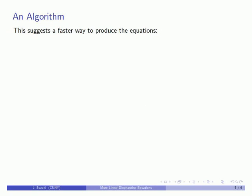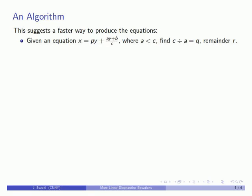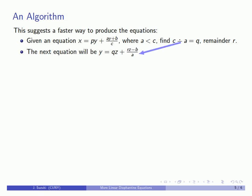This suggests a faster way to produce our equations. If we have the equation x equals py plus (ay + b) / c, where a is less than c, we divide c by a — the larger by the smaller — to get some quotient q with some remainder r. That allows us to write down the next equation almost immediately: y equals q·z plus (r·z minus b) / a. So our plus b in the original becomes minus b in the next one, and our denominator is whatever we were dividing by. We continue this process until a equals 1, at which point the fractional part is automatically a whole number.